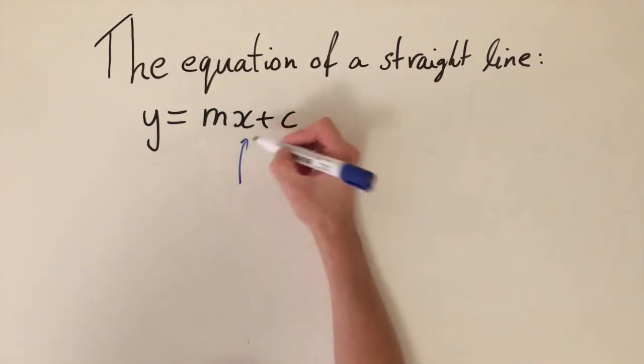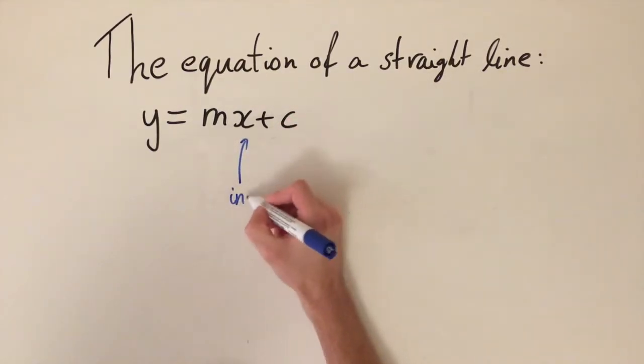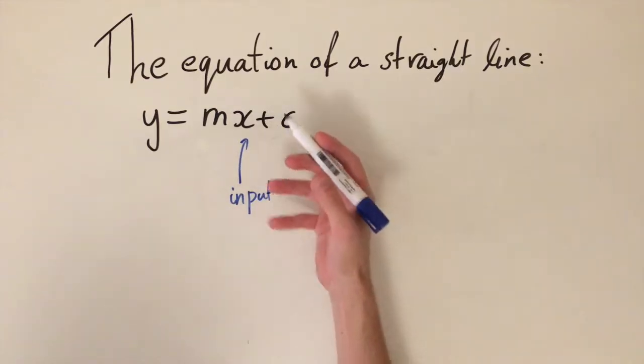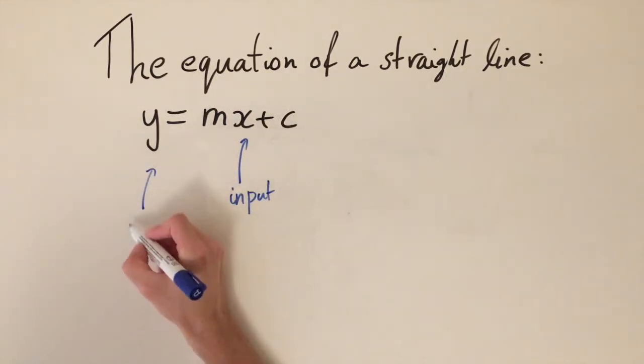Firstly, if we look at x, this can be thought of as the input. So if this is a function, the numbers that we're putting in is in the form of x, and the numbers that we're getting out, this is just y, so this is the output.